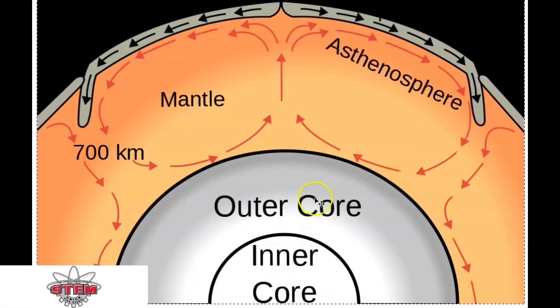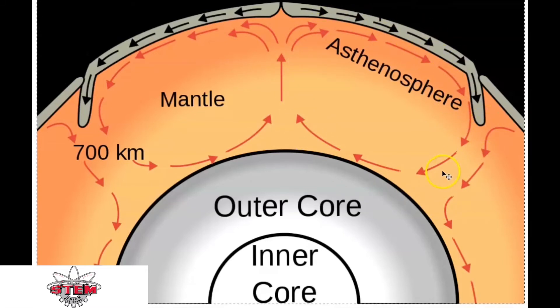The core is really hot. This causes the heat to shift to the asthenosphere, which causes convection currents to form. These convection currents are shown by these circular cells.